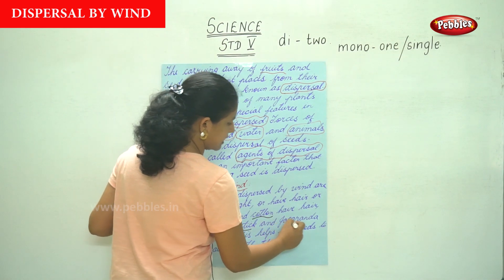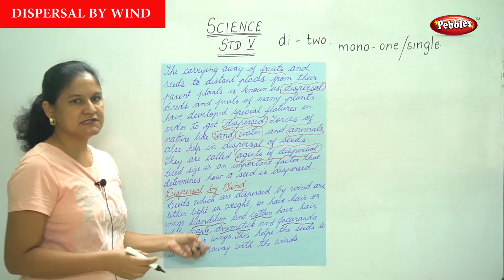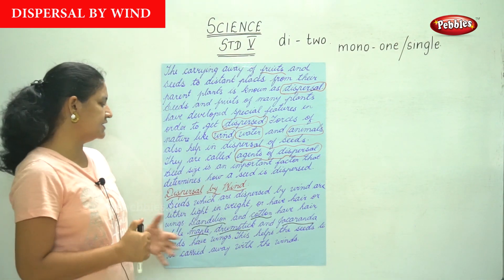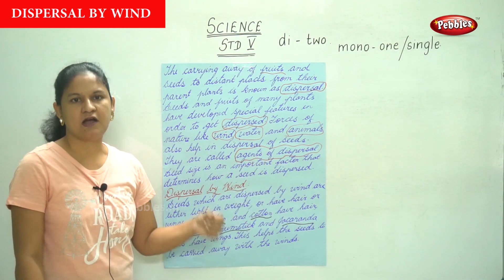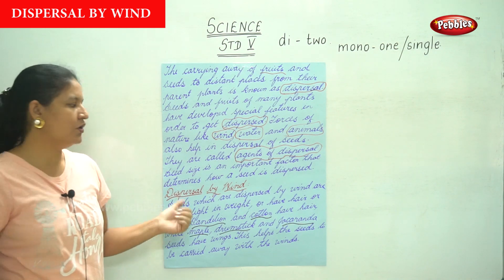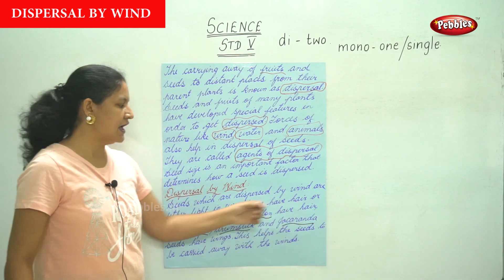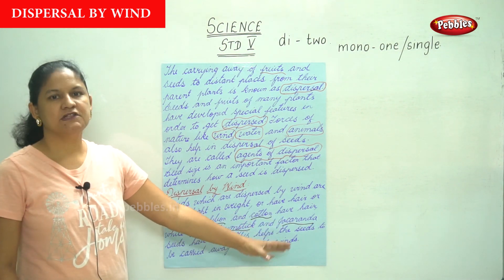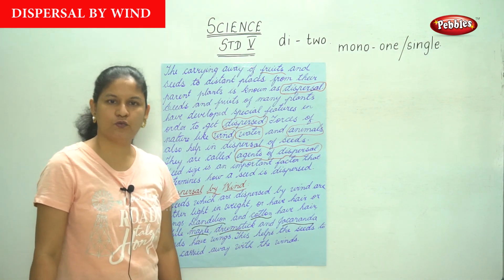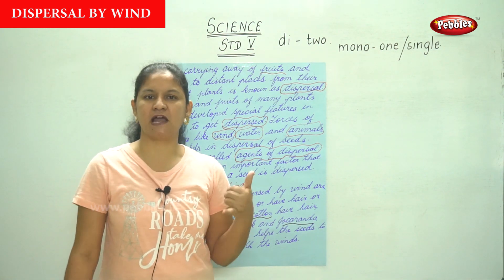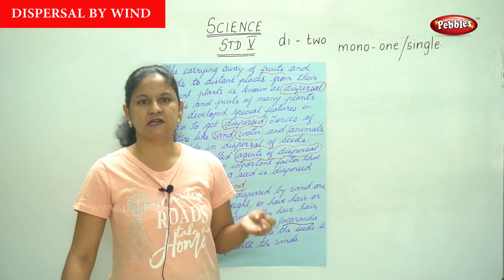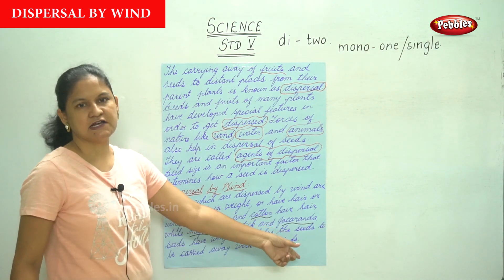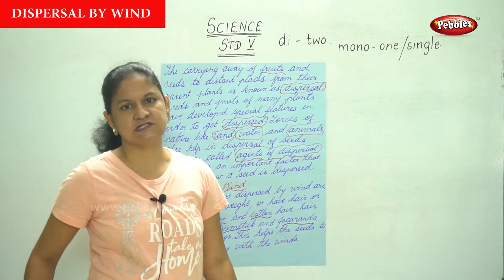Drumstick and jacaranda seeds have wings, and this helps the seeds to be carried away with the wind. To be dispersed by wind, seeds either have to be light in weight or they need to have hair or wings. Examples: dandelion and cotton have hair, while maple, drumstick and jacaranda seeds have wings.